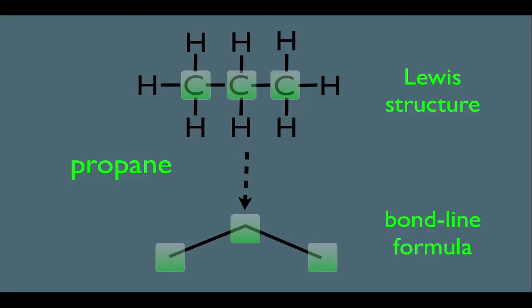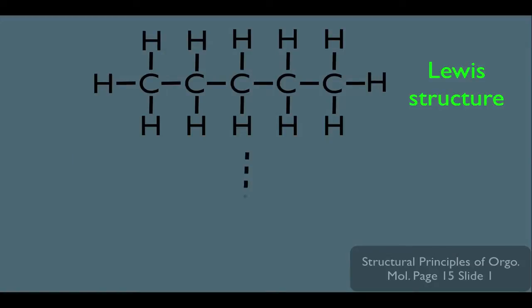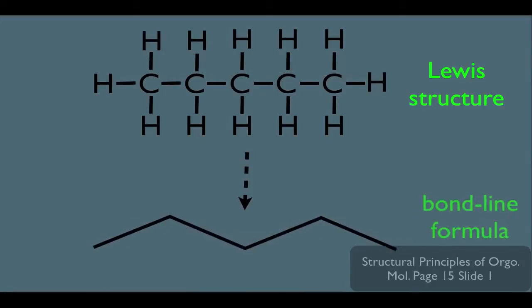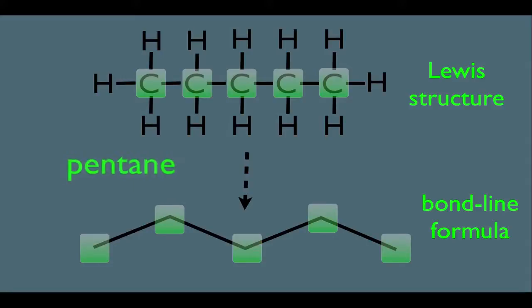To make sure you understand this, I'm also going to talk about this molecule right here. This is its Lewis dot structure, and this right here would be its bond line formula. The five carbons here in this chain would be these five points down here. The name of this compound happens to be pentane. In this representation, we really only care about the length of the carbon chain of the molecule.